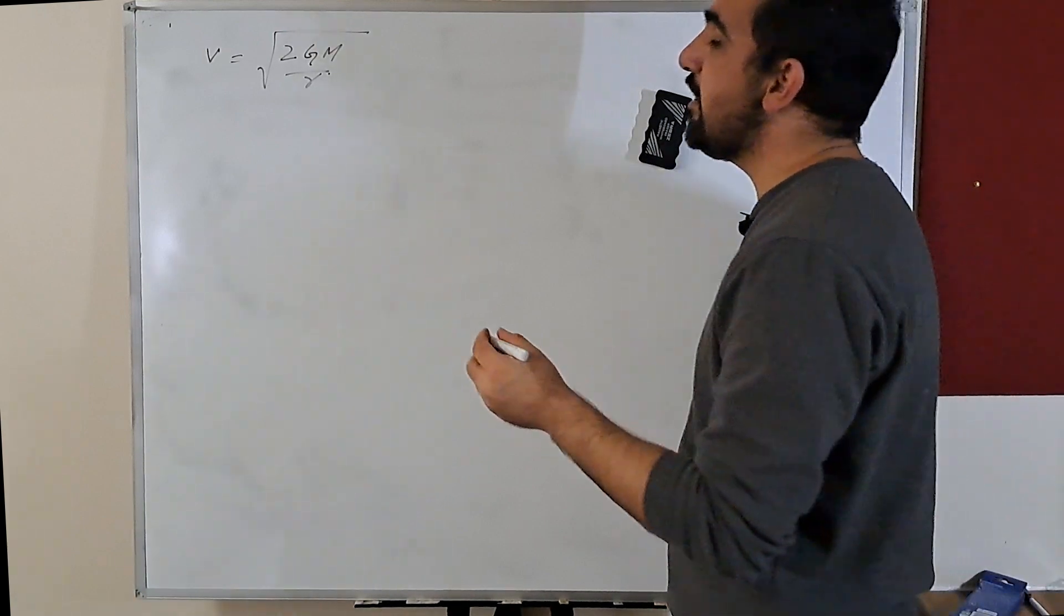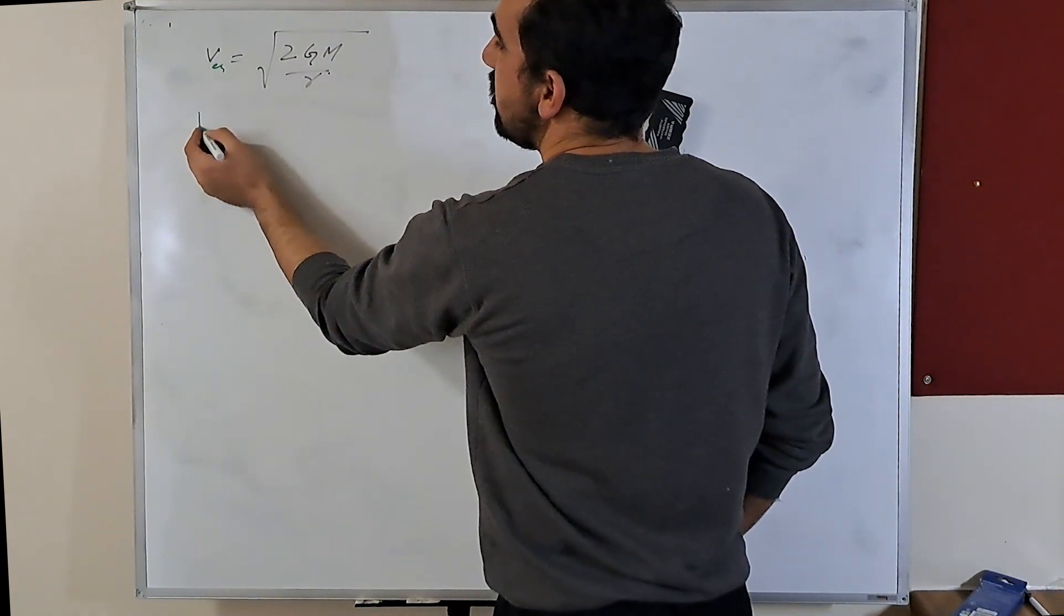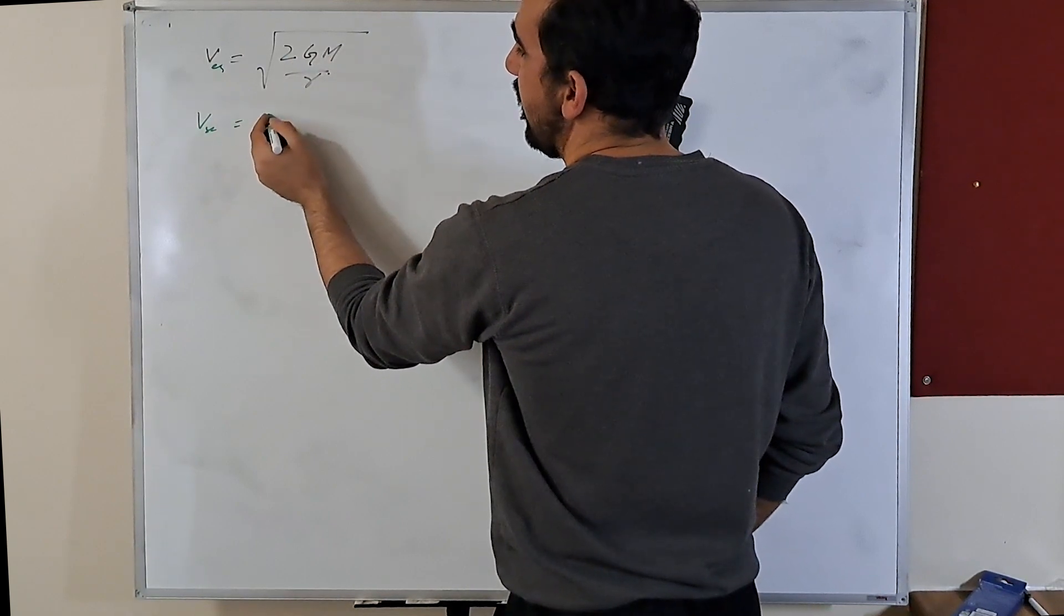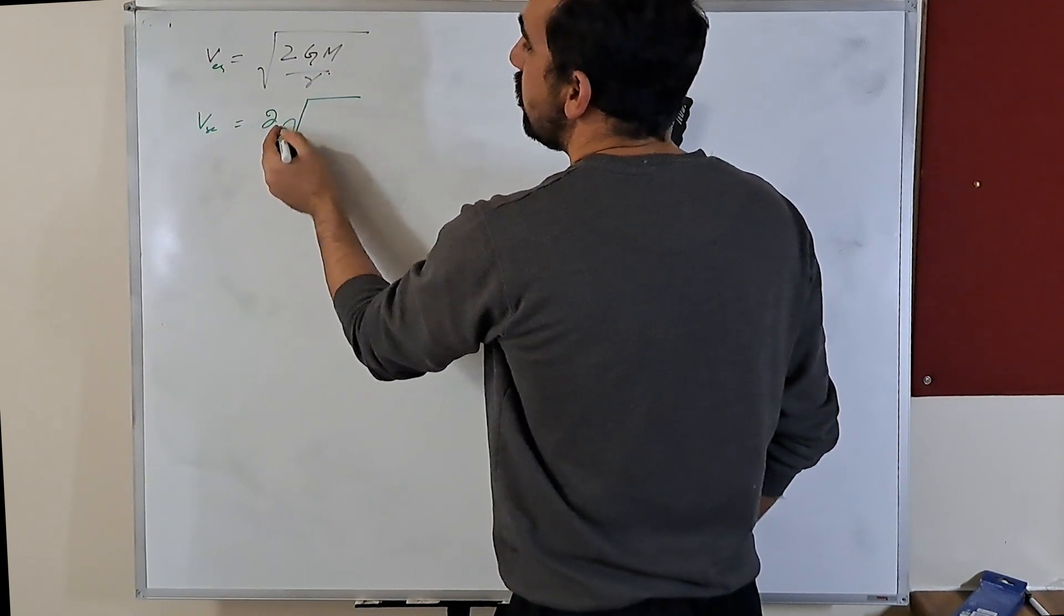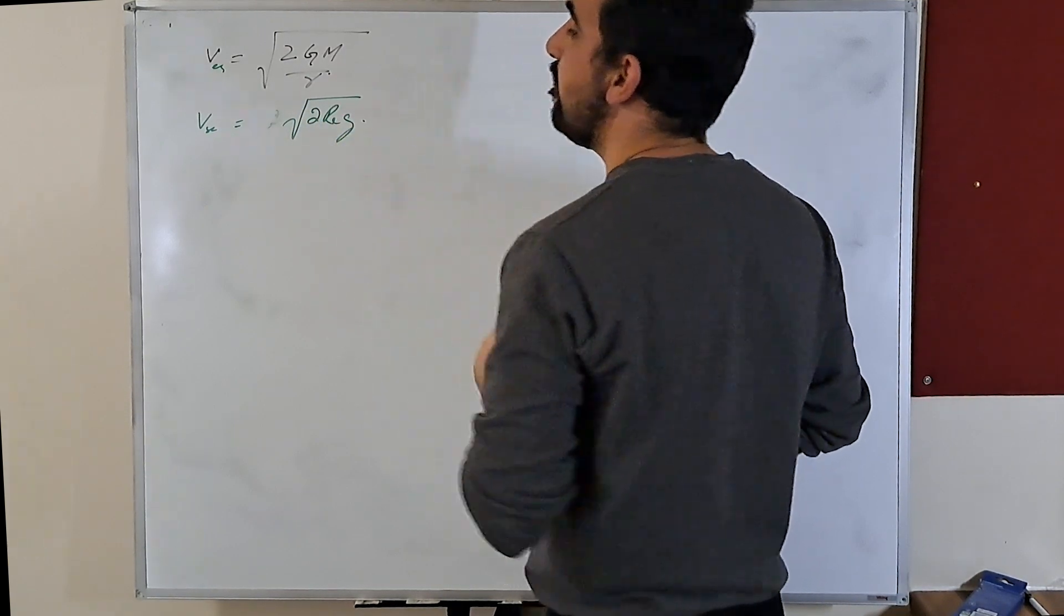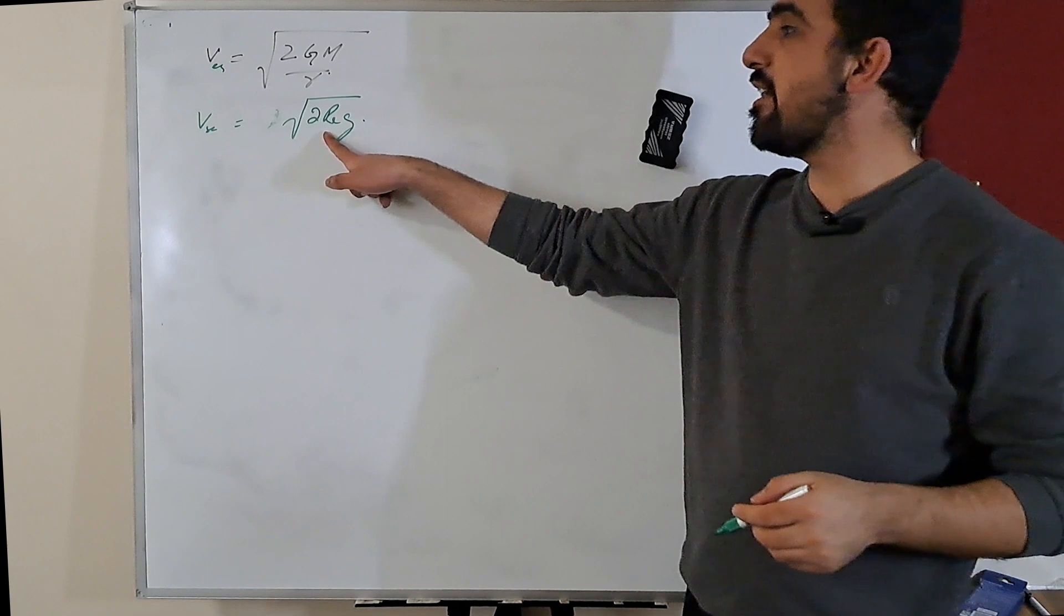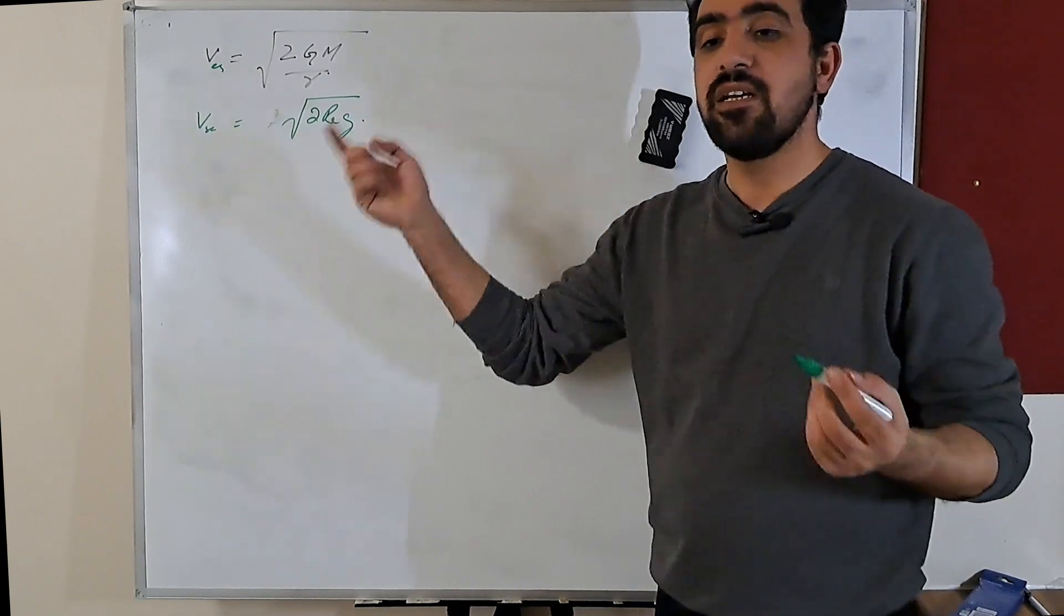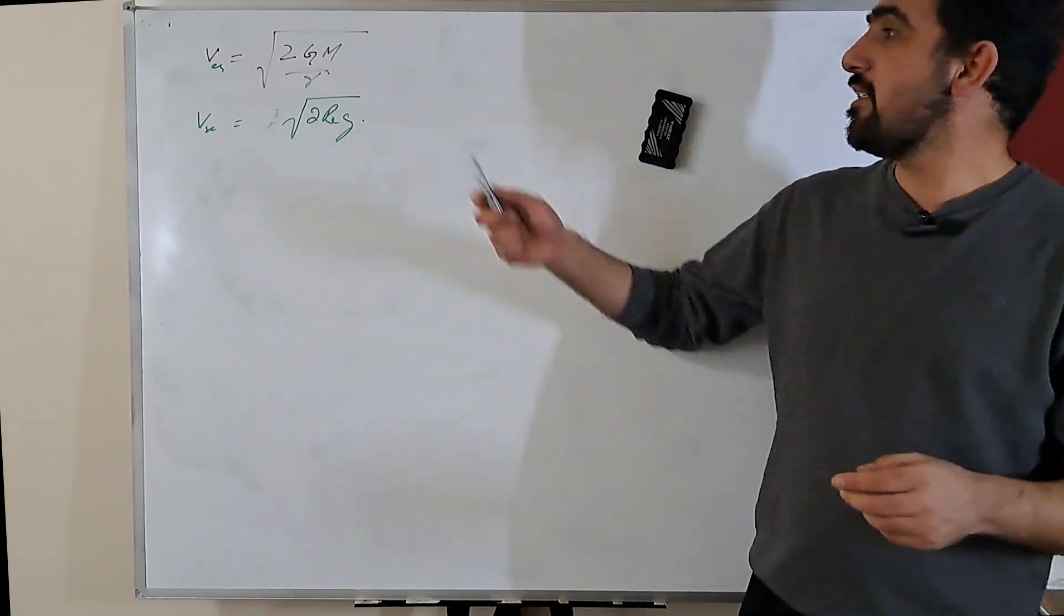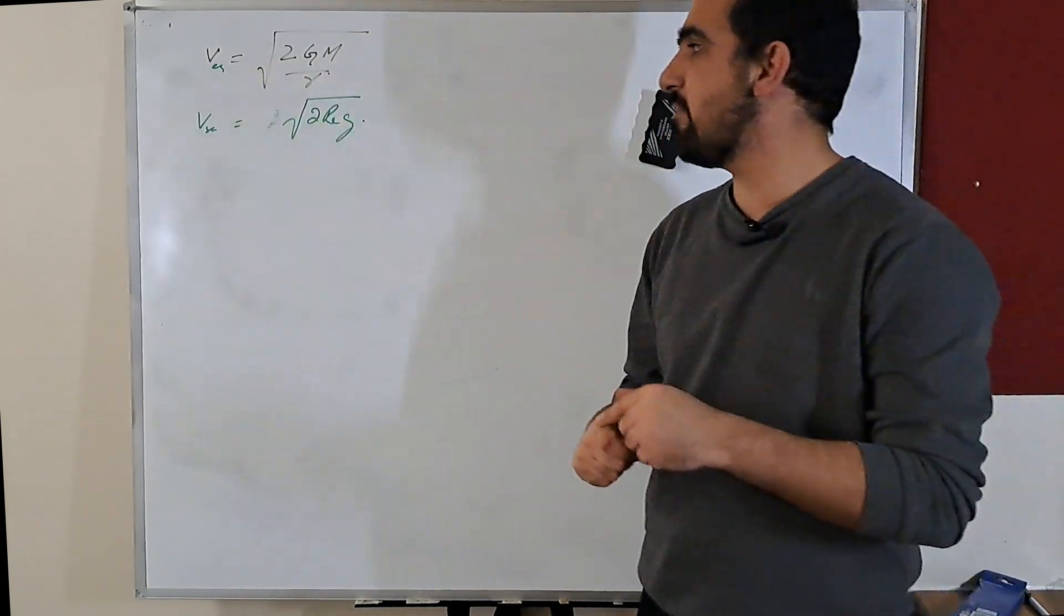You can also write escape velocity as v_escape equals square root of 2GM divided by r, which is also under root 2r_e multiplied by g. r_e is the radius of Earth and g is the gravitational field strength. So 2r_e multiplied by g is the same as 2GM divided by r.